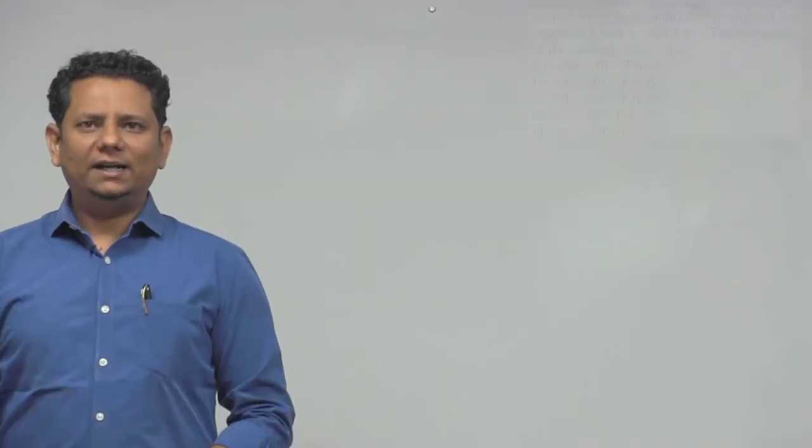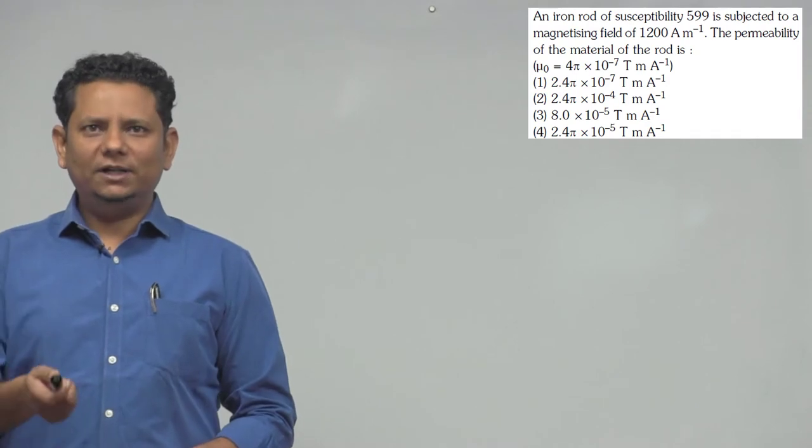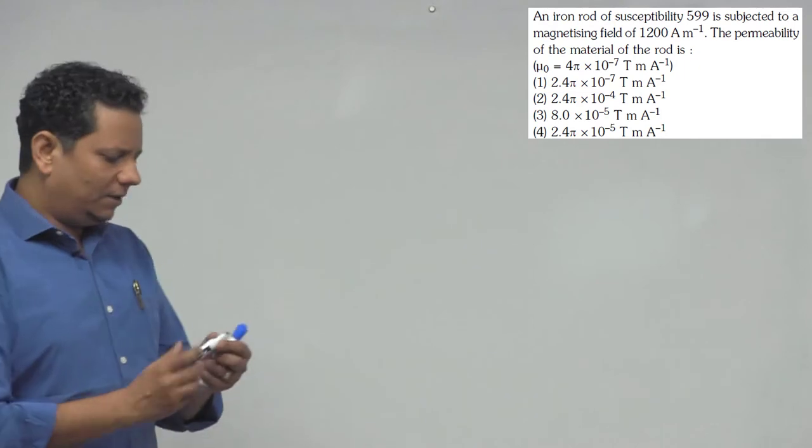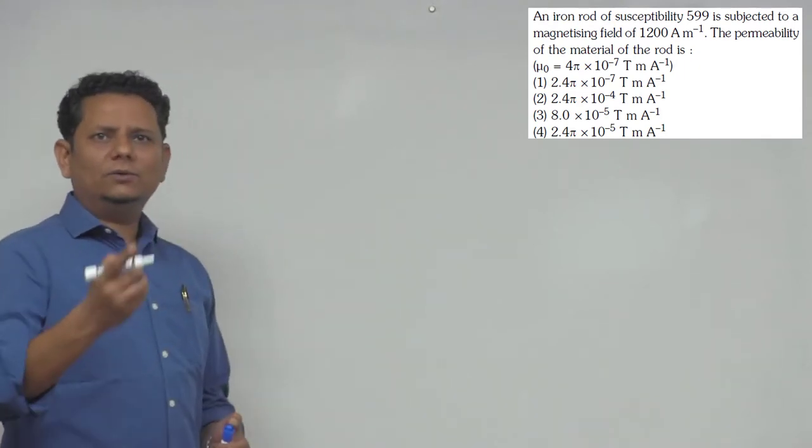Next question: An iron rod of susceptibility 599 is subjected to a magnetizing field of 1200 ampere per meter. The permeability of the material of the rod - in this case, μ₀ is given as